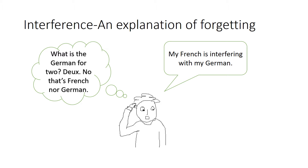Interference is one explanation for forgetting. It says that one memory disrupts the ability to recall another, and this is most likely to occur when the two memories are similar. For example, if you're on holiday in Germany and you're trying to remember German for two, your knowledge of French that you've learned previously may interfere with trying to remember the German.